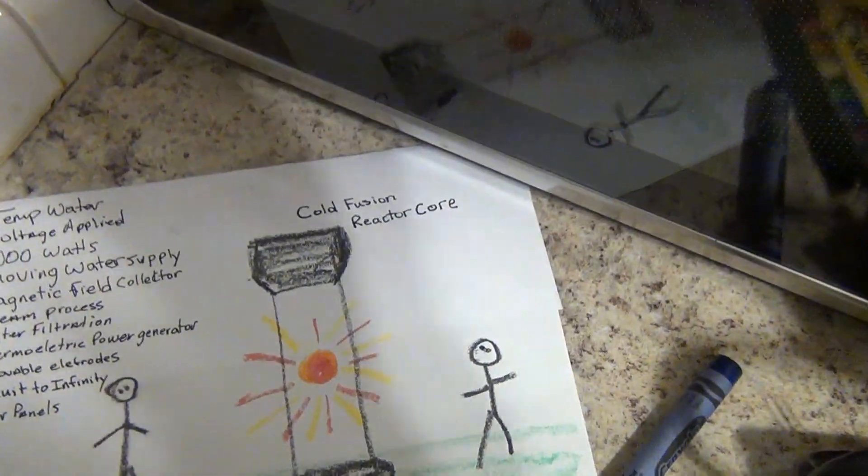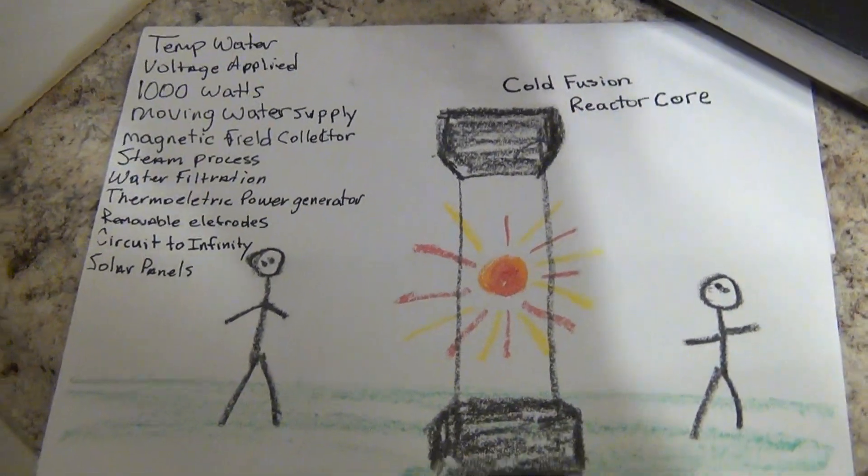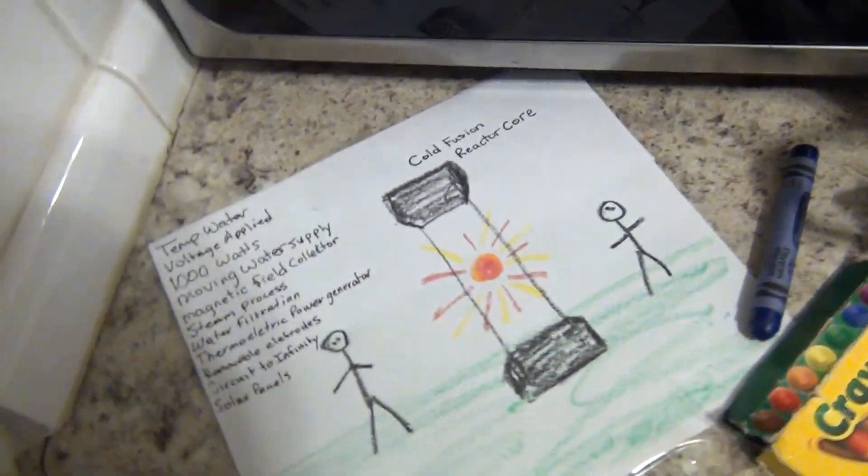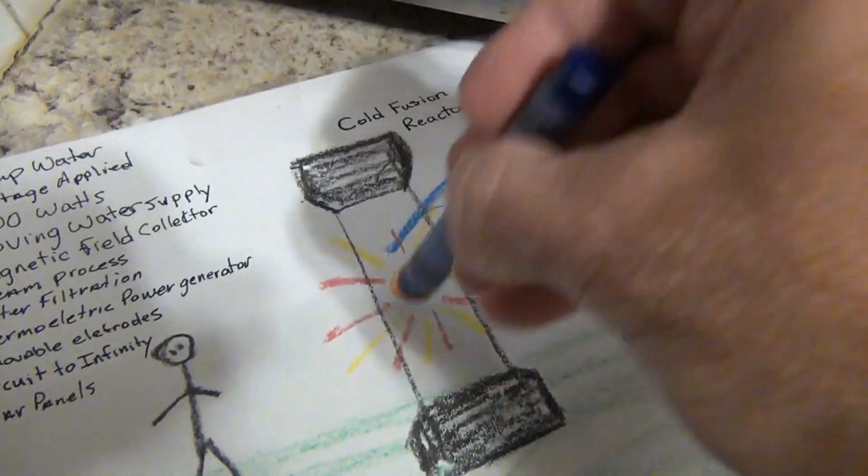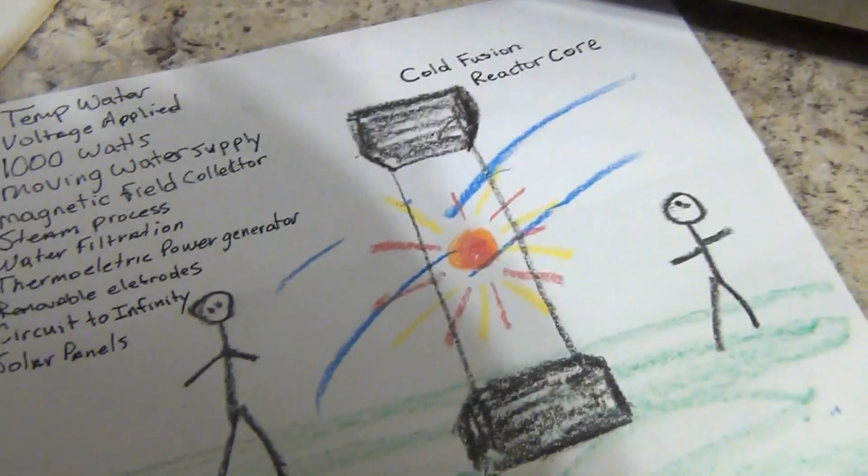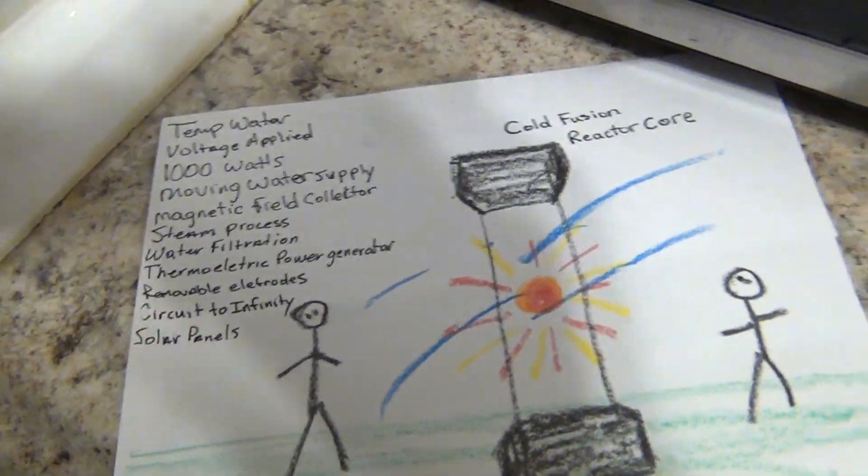You can see it picks up the electromagnetic field. So the cold fusion reactor throws off energy in many different ways. Think about this. I just sketched this out for you. So it's going to be throwing off power in every direction. Think about that. It's all invisible.